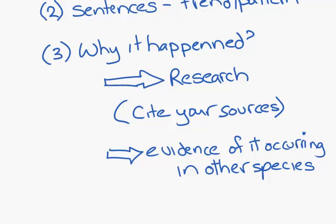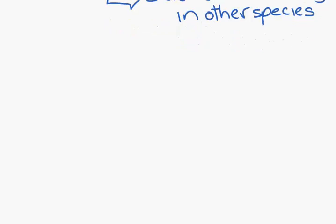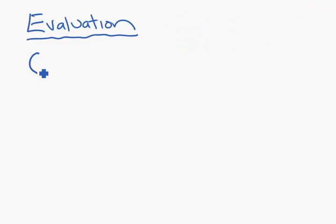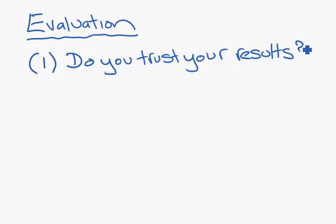Following our conclusion, we would have an evaluation. Now, your evaluation should have four parts. Firstly, a really big overall, do you trust your results? Overall, given how you did it, the weaknesses you know about, the number of times you did it, do you trust them? I believe these results are correct. And then we start to break that up a bit.